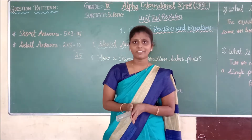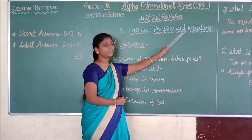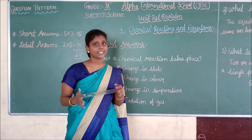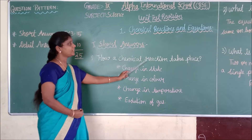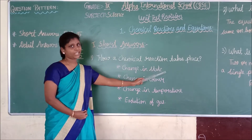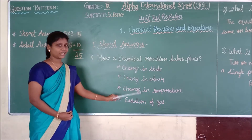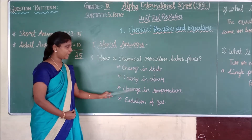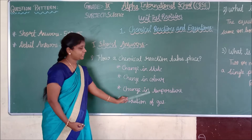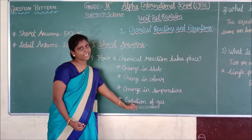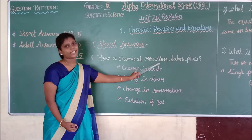Next, we are going to revise the 3-mark questions for the chemical reactions and equations lesson. How does a chemical reaction take place? A chemical reaction takes place by change in state, change in color, change in temperature, and evolution of gas. In these 4 ways, a chemical reaction takes place.